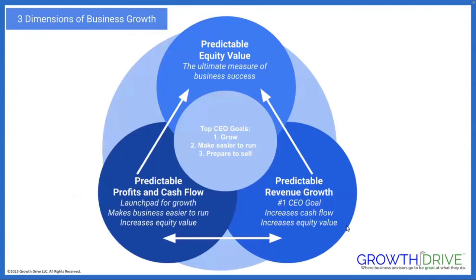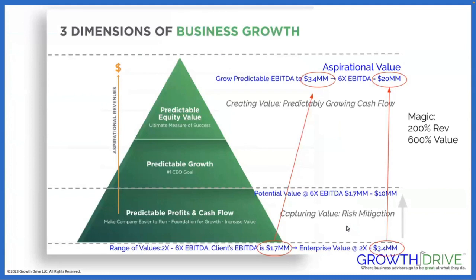Prioritizing these tasks is natively built into the three dimensions of growth. We move through the three dimensions as phases of the engagement. However, creating strength — strategic capacity — in one dimension necessarily impacts and improves the other two. That's why they're dimensions and not phases.